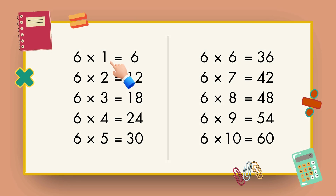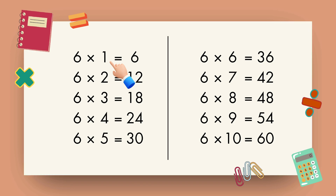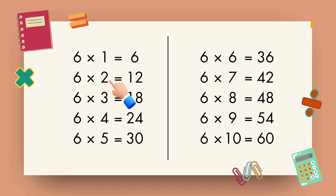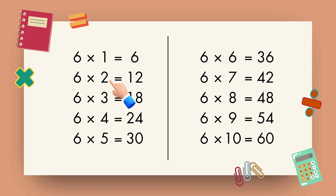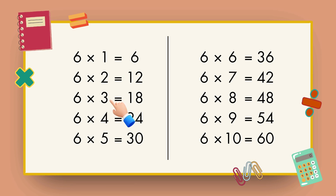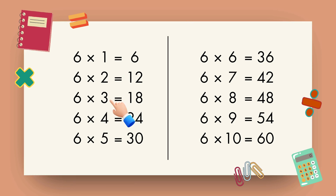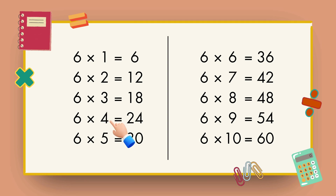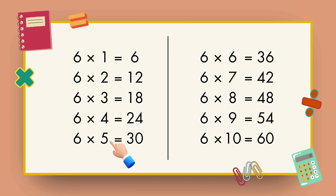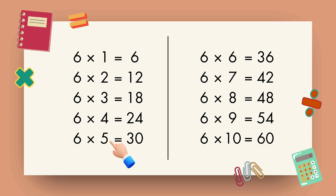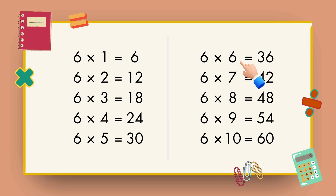6 1s are 6, 6 2s are 12, 6 3s are 18, 6 4s are 24, 6 5s are 30, 6 6s are 36.